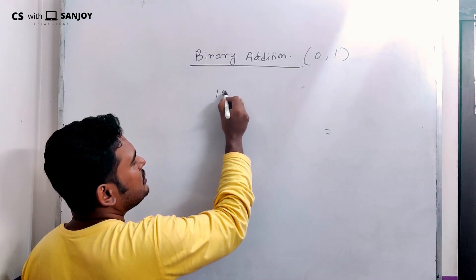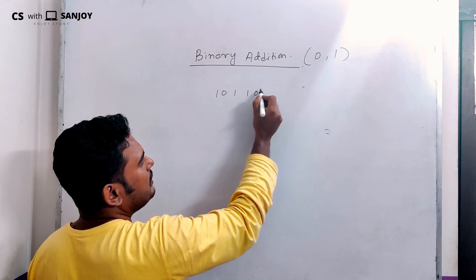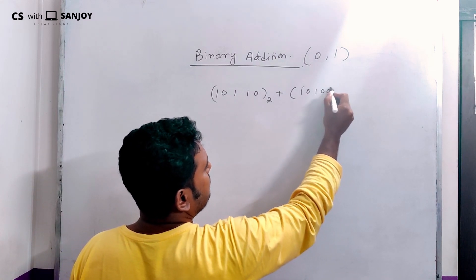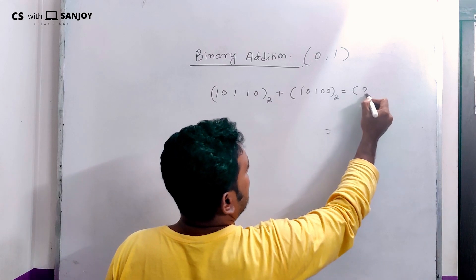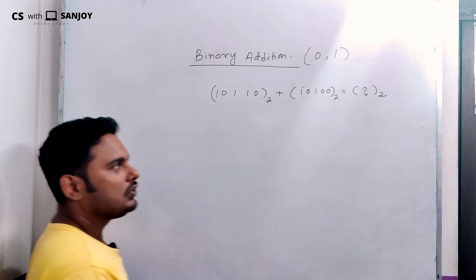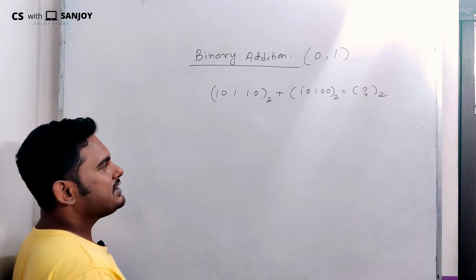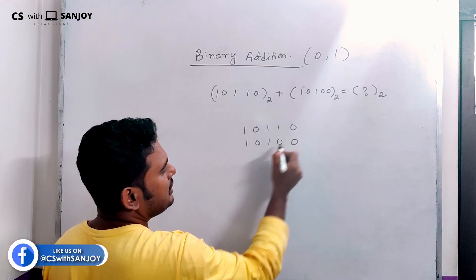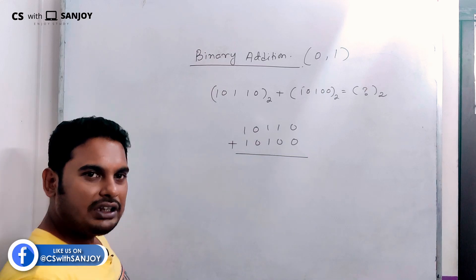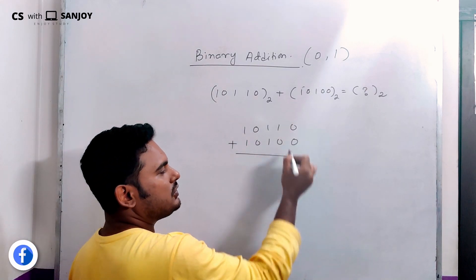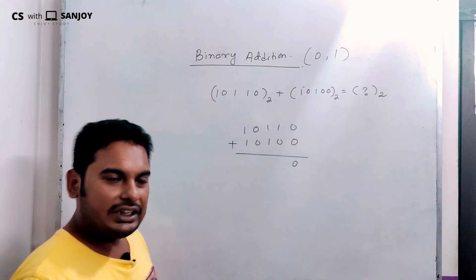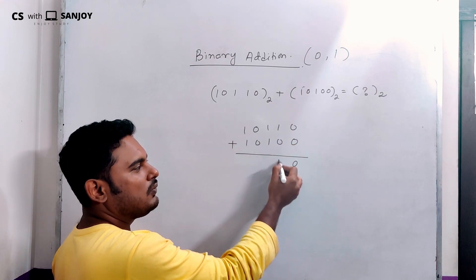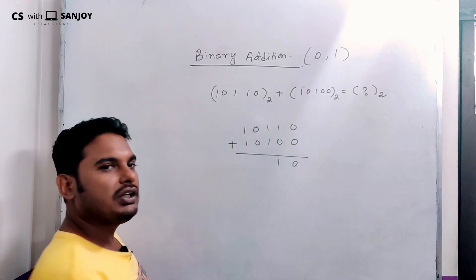So let's see what we do in binary. The binary number is 1 0 1 1 0, plus 1 0 1 0 0. These are our two binary numbers. So let's write our numbers: 1 0 1 1 0. The binary digits are written column by column, starting with 0.